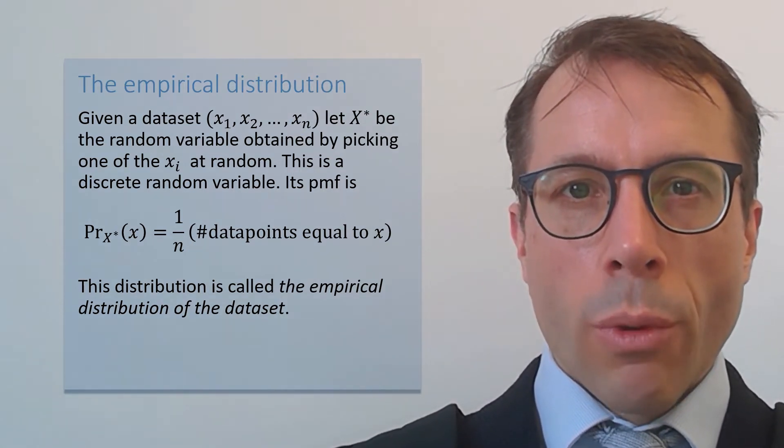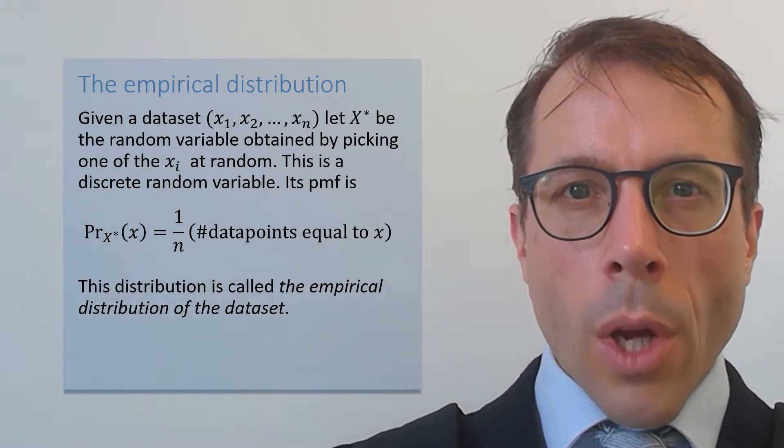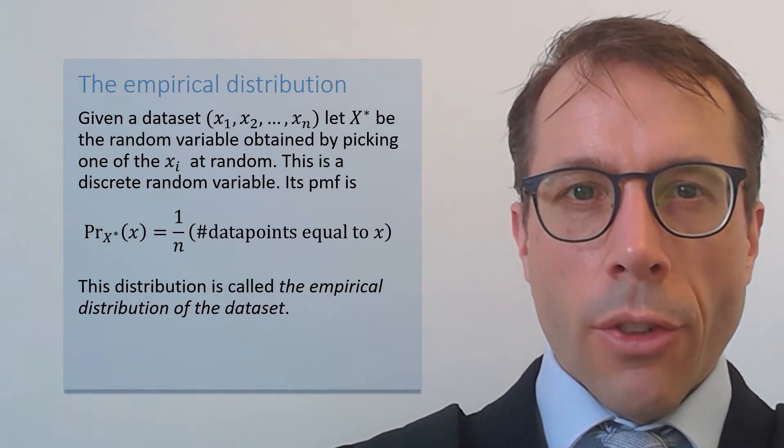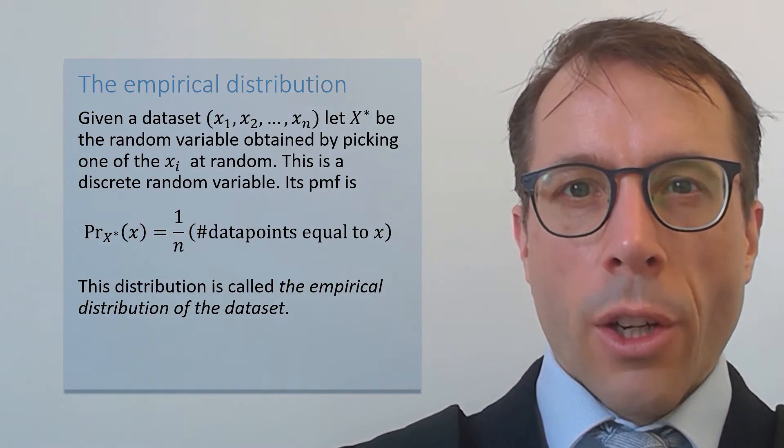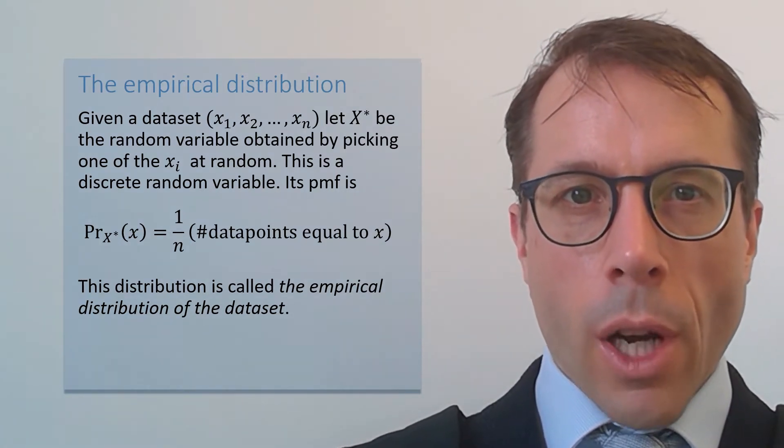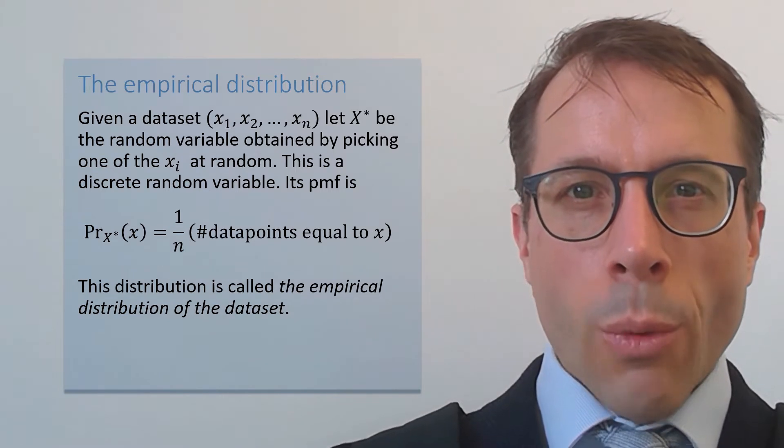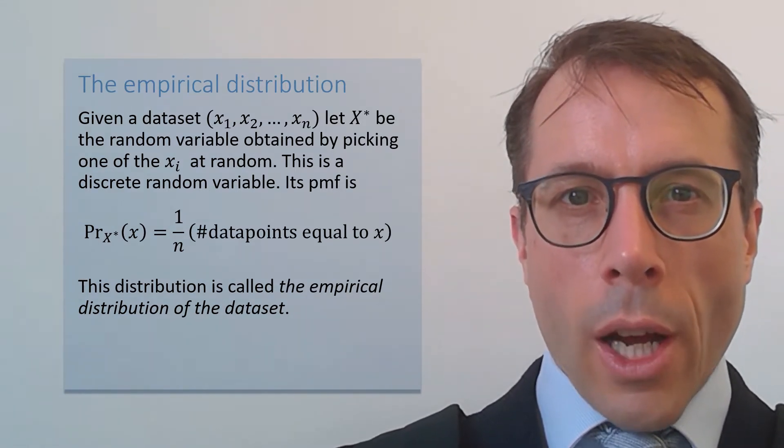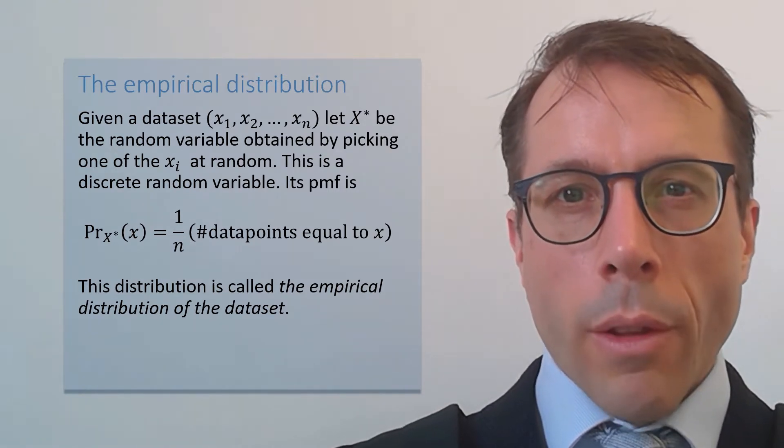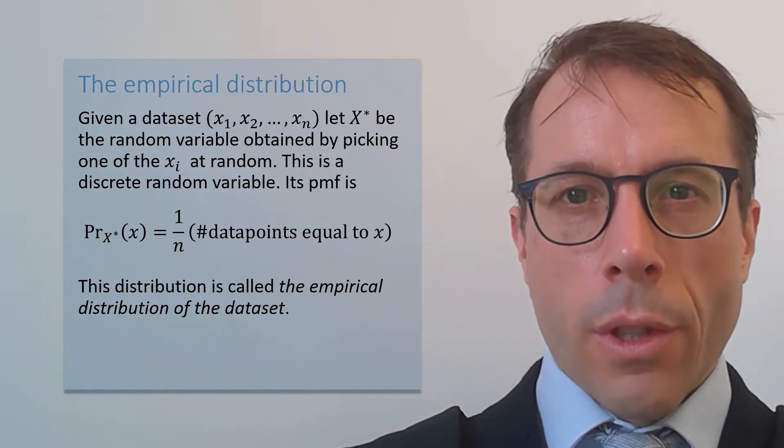I've written this out here in general form. This form works whatever the type of your dataset, whether it's numbers or strings or whatever you like. We can't talk about cumulative distribution functions for arbitrary types, only for numbers, which is why I've written out this as a statement about the likelihood, i.e. the probability mass function, rather than as a statement about the cumulative distribution function.